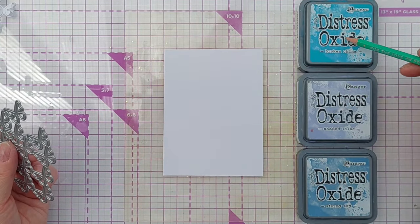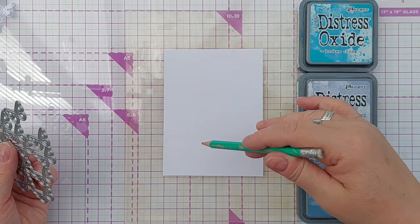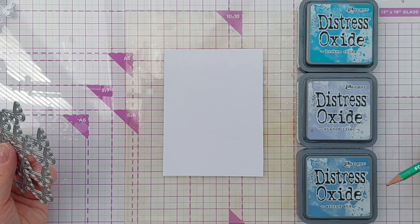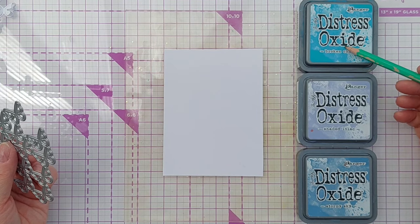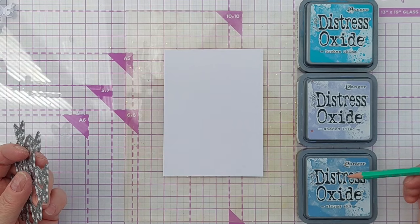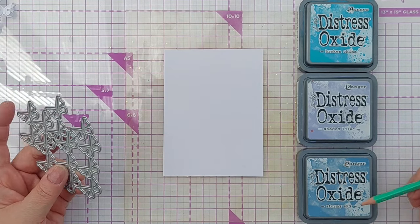I'm going to use Distress Oxide to color this piece of card. I've got Broken China, Shaded Lilac and Stormy Sky which are, that's a bluey green, that's a lilac-y color and we've got a pale indigo I think there.